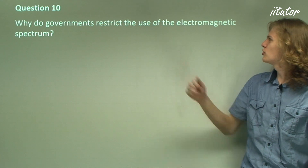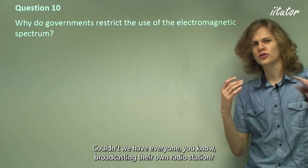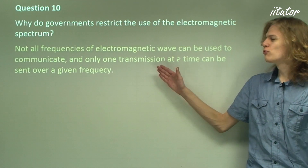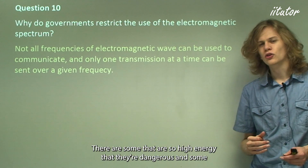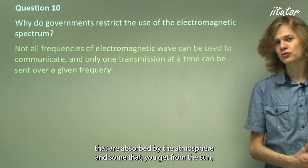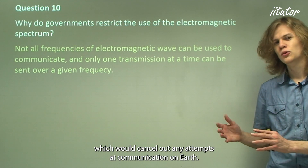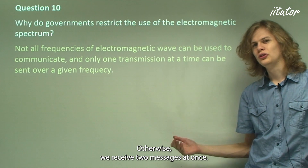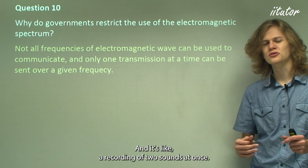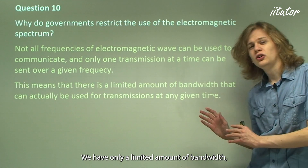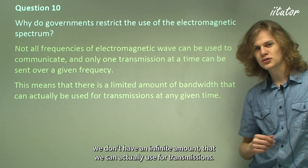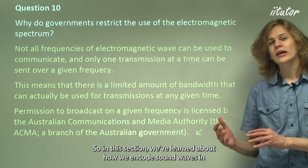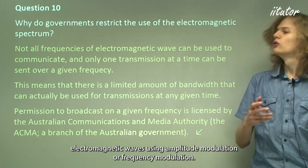Question 10: Why do governments restrict the use of the electromagnetic spectrum? Not all frequencies can be used for communication — some are too high energy and dangerous, some are absorbed by the atmosphere, and some overlap with solar transmissions. Only one transmission can use a given frequency at a time; otherwise two messages overlap and become indistinguishable. We have only a limited usable bandwidth. In this section, we've learned how sound waves are encoded in electromagnetic waves using amplitude modulation or frequency modulation.